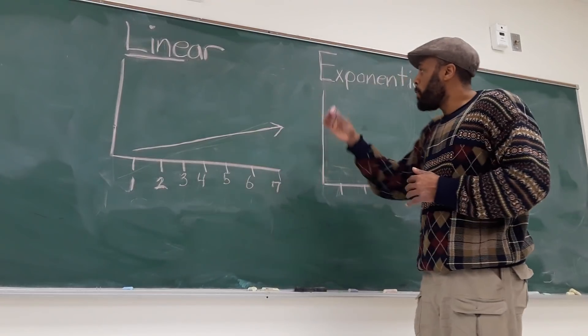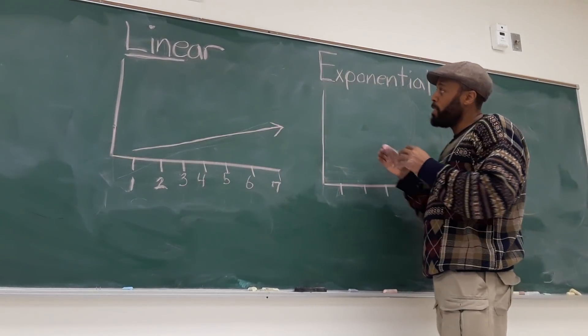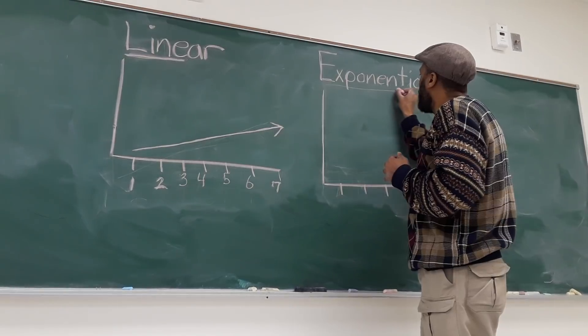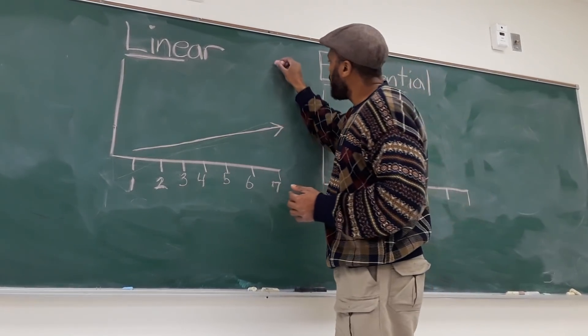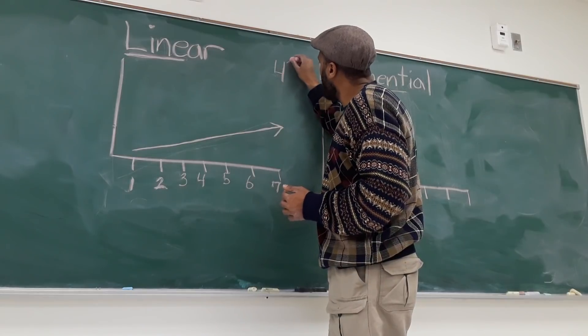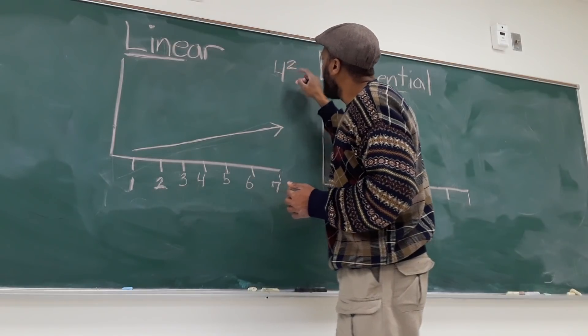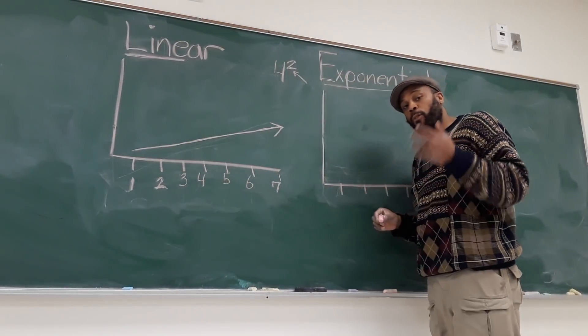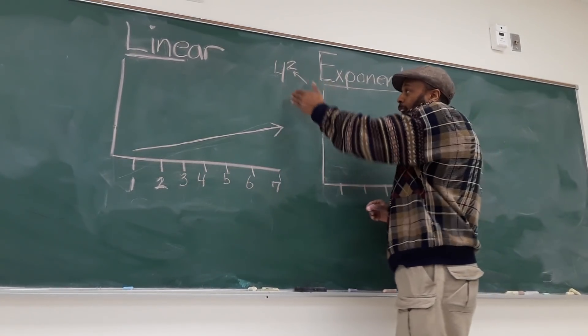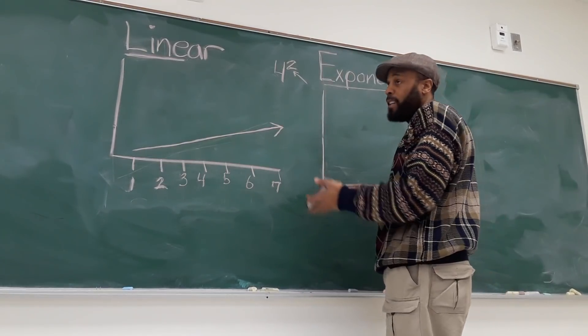Now the difference between that and the exponential growth model was, you notice in the word exponential is you have the word exponent. So in mathematics, if you look at this, that is the exponent. What it informs you to do is to multiply or to double the number you have at the base.